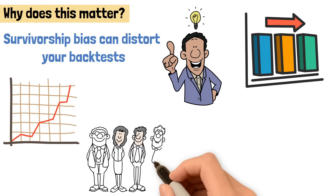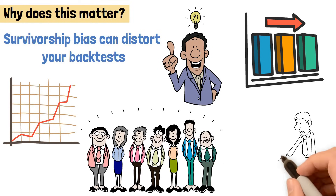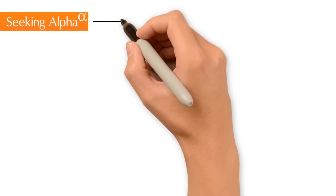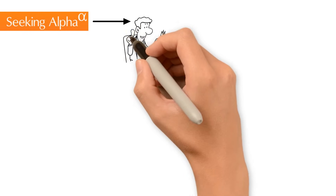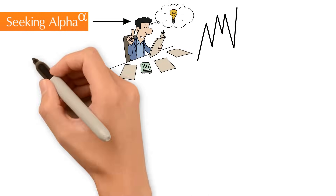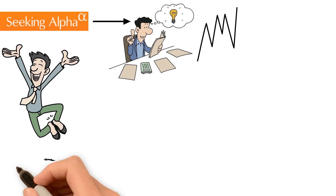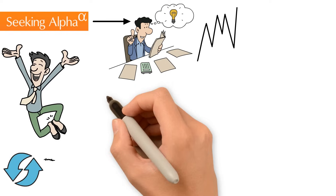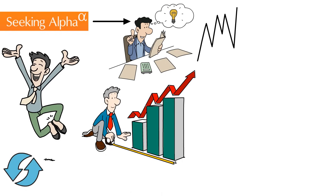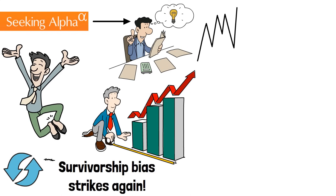Let's explore some real-life examples of survivorship bias in trading and backtesting. For instance, Seeking Alpha recently published a strategy that showed impressive outperformance, but the catch was that it picked winners based on past performance, which is unlikely to be repeated — because as mentioned earlier, most stocks end up going nowhere or being losers. Survivorship bias strikes again.